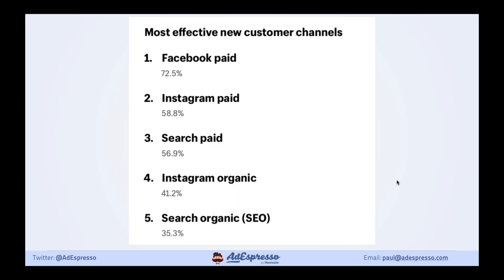Here's some data from Shopify. They surveyed some of their largest clients about what paid and organic channels they're using. Facebook and Instagram — Instagram is owned by Facebook and they use the same ad platform — are the biggest for new customer acquisition. Paid search, so Google Ads, is number three. This is why this webinar is focused on Facebook and Google. To drive big volume of sales, you want to be looking at Facebook, Instagram, and Google Ads.